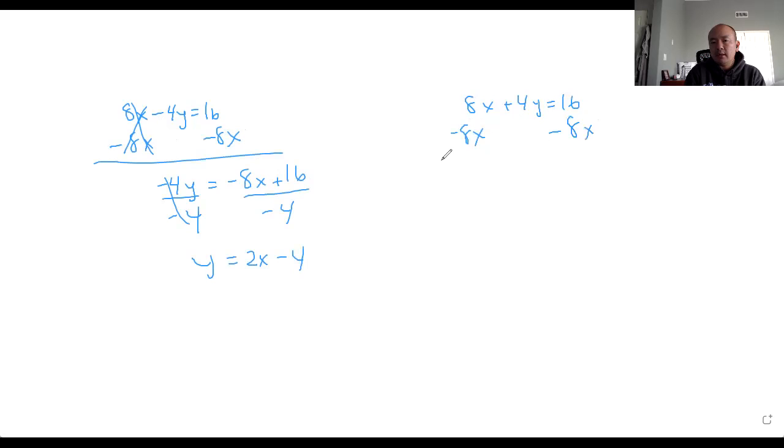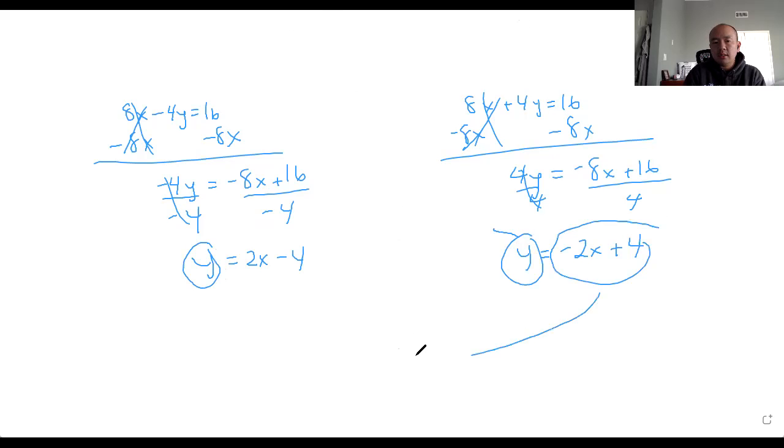The same thing here. I'm just going to do this quickly because we did it already for the graphing portion. Negative 8x plus 16. You divide by 4. And so y equals negative 2x plus 4. And then, okay, I didn't want to graph this. What you want to do is, so you know how both of them are equal to y. So what I'm going to do is I'm going to substitute this portion into this variable.